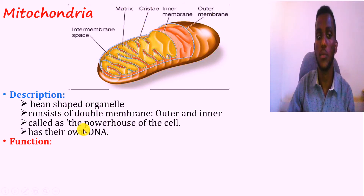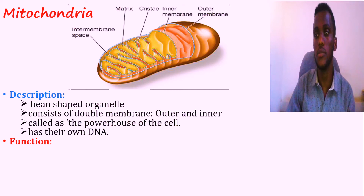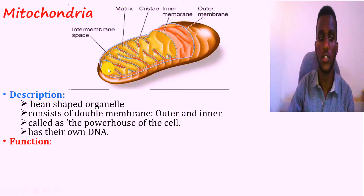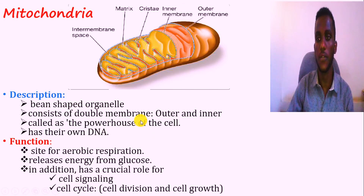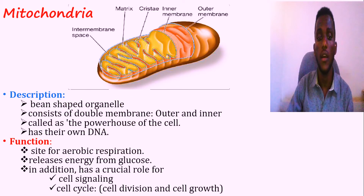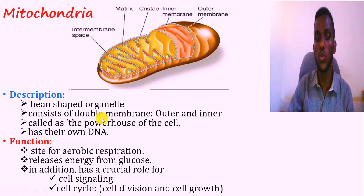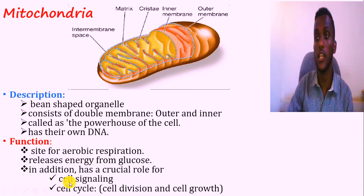Mitochondria is also known as the powerhouse of the cell. It synthesizes energy and consists of its own genetic material — DNA. The main function is aerobic respiration, which takes place to produce energy in the form of ATP from glucose. In addition, mitochondria are important in cell signaling as well as the cell cycle.